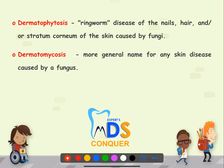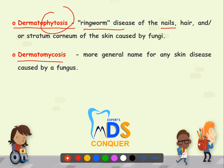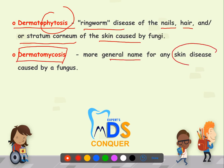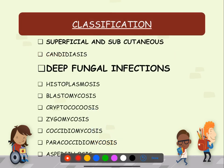There are two important terminologies: dermatophytosis and dermatomycosis. Dermatophytosis refers to ringworm disease involving the nail, hair, and stratum corneum of the skin. Dermatomycosis is a general name for any skin disease caused by a fungus. In the classification of fungal infections, there are superficial and deep fungal infections; the deep ones are also granulomatous infections.